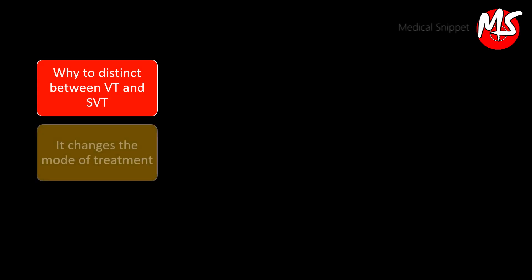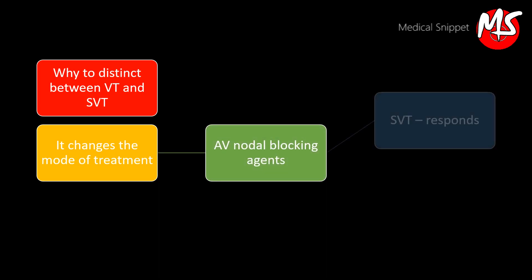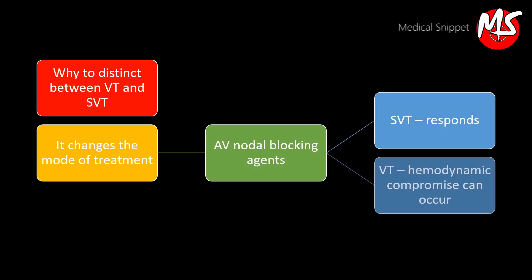Ventricular tachycardia versus supraventricular tachycardia with aberrancy — why differentiate between the two rhythms? It changes the mode of treatment. SVT responds to AV nodal blocking agents, but these agents may precipitate hemodynamic compromise in VT. Let's see the ECG features that favor VT.